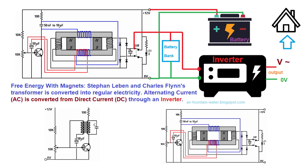Replicating this device demands meticulous experimentation with the number of turns in each coil and the wire diameter to carry the desired current. Levin advises that the black output coils must have at least twice the weight of copper as the blue input coils to enable the generation of excess power. As a relatively recent circuit release, the absence of widespread replications poses a challenge, underscoring the need for further exploration and validation.